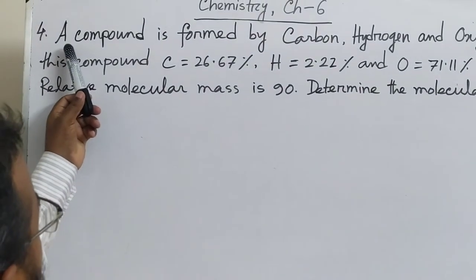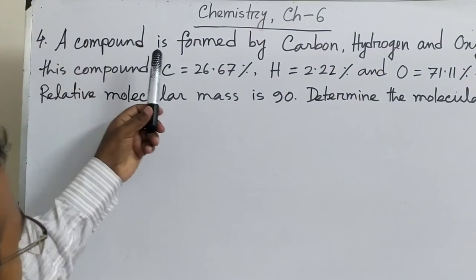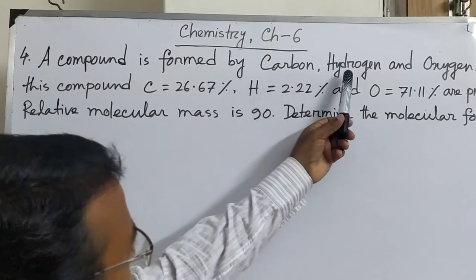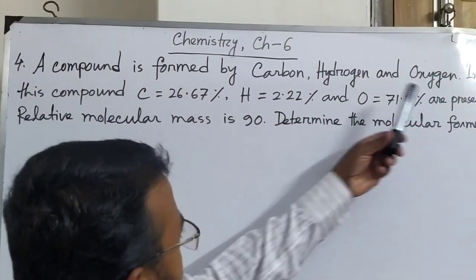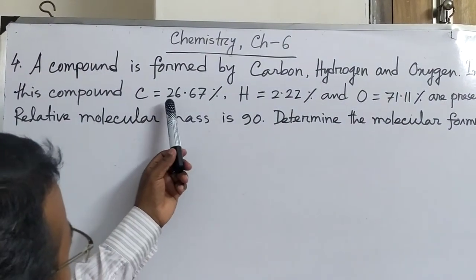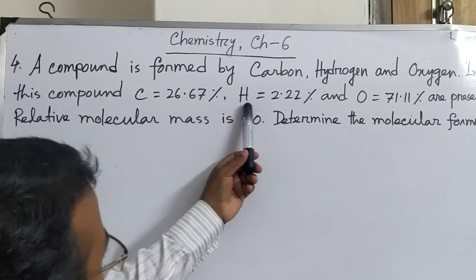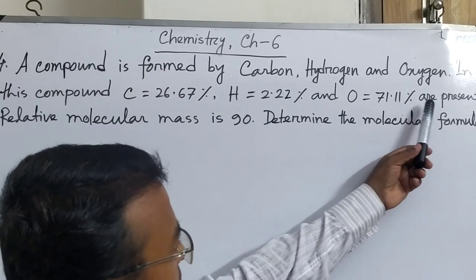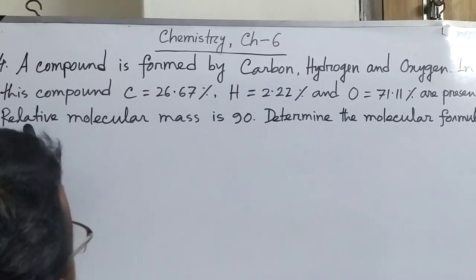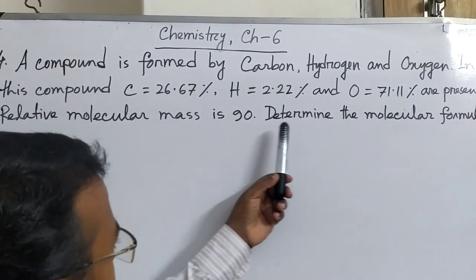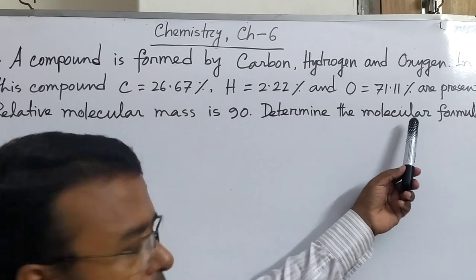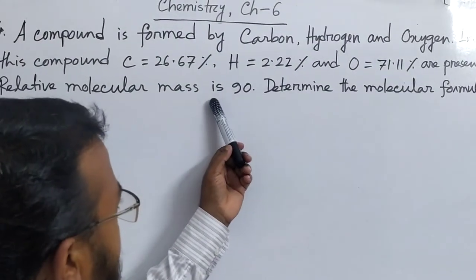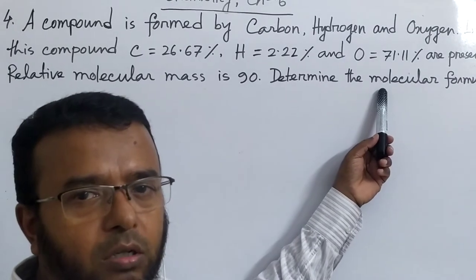Question number 4 is a mathematical problem. A compound is formed by carbon, hydrogen, and oxygen. In this compound, carbon is 26.67%, hydrogen is 2.22%, and oxygen is 71.11%. The relative molecular mass is 90. Determine the molecular formula.